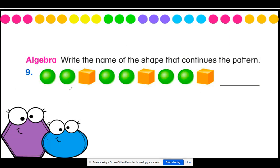The next question says to write the name of the shape that continues the pattern. Just like with our plane shapes, I can also put together a pattern that will repeat itself with my solid shapes. So let's look at what we see here: sphere, sphere, cube, sphere, sphere, cube, sphere, sphere, cube. Take a minute to think what would come next in the pattern, remembering that a pattern always repeats. I hope that you said the next shape in the pattern would be a sphere.